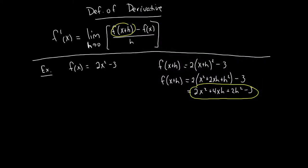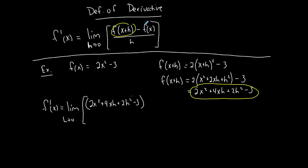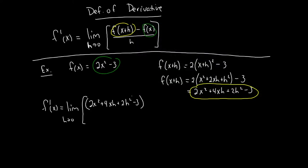Now I'm going to find f prime of x. It is the limit as h approaches 0 of f of x plus h, which we just determined is 2x squared plus 4xh plus 2h squared minus 3, then minus f of x, which is just 2x squared minus 3, all over h.